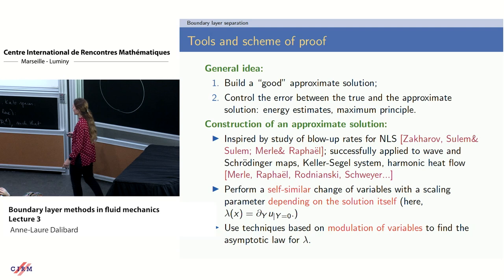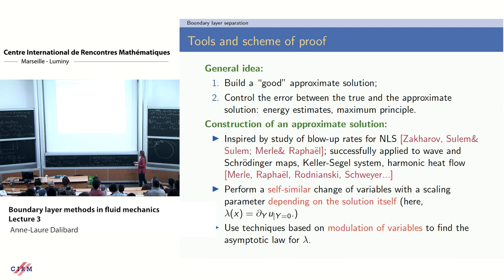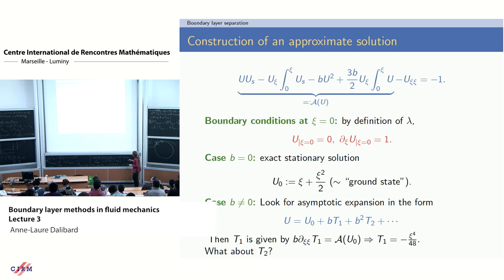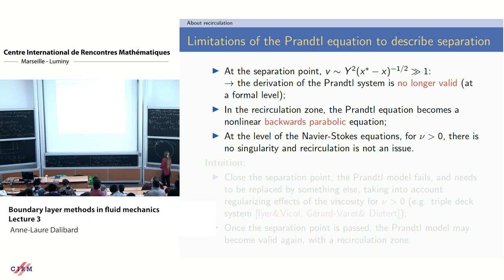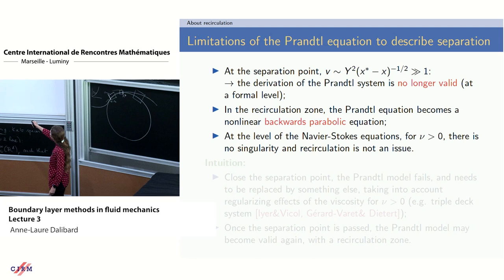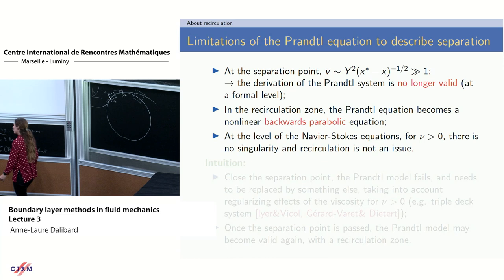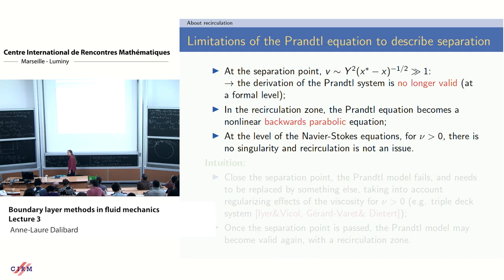Now I move to recirculation — what happens after separation. At the separation point, v becomes infinite (the Goldstein singularity), which is problematic because the Prandtl derivation assumes everything remains bounded.